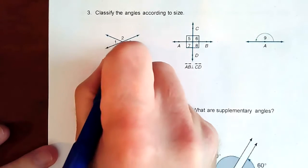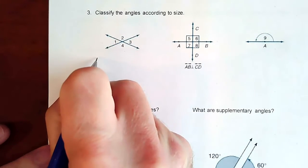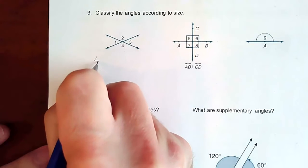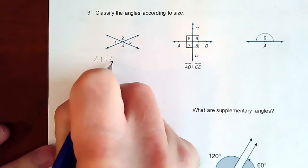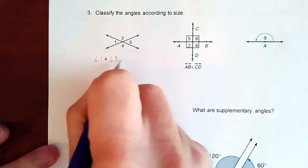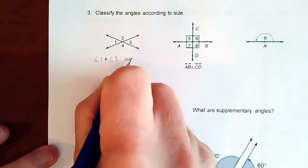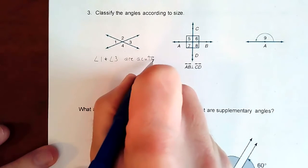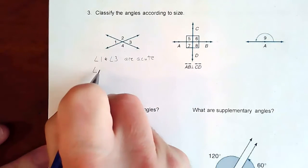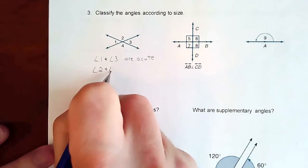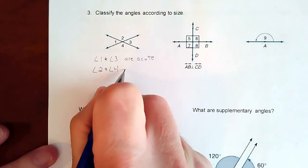So one and three are smaller angles. By smaller, I mean less than 90. So angles one and angle three are acute. And then two and four look like they're bigger than 90. So those are obtuse.